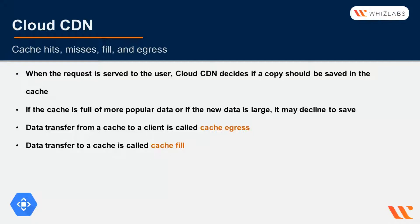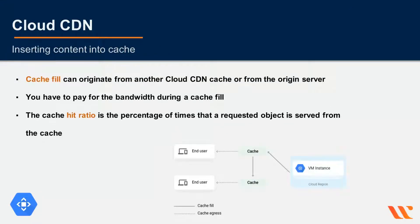If the content is cacheable, the cache will store it for future requests. It may not save it if the cache is full with popular data or if the new data is too large. The data transferred from cache to a client is called cache egress; the data transferred to a cache is called cache fill. On a cache hit you pay for cache egress bandwidth. Cache fill can originate from another Cloud CDN cache or from the origin server, and you pay for bandwidth during a cache fill.